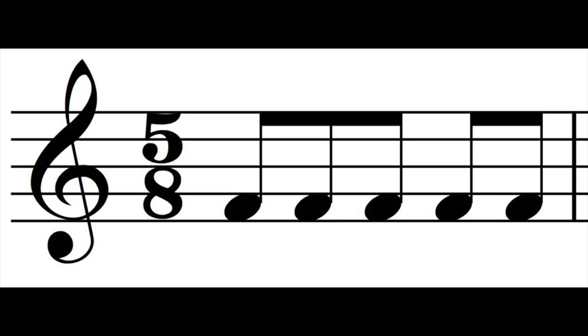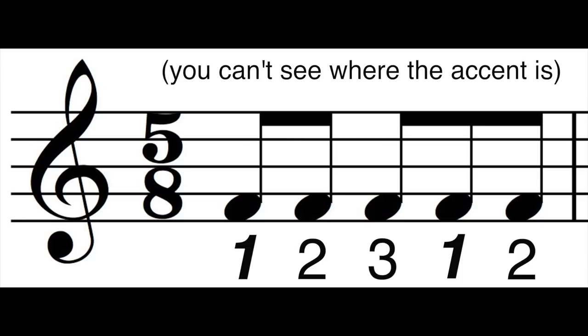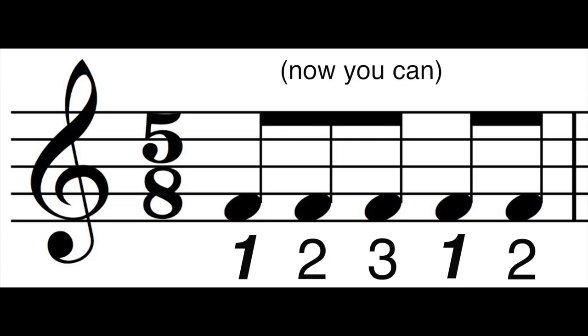To answer your odd time signature question: make sure that whatever the subdivision the music is supposed to be felt in is reflected in the parts. If the music has a particular grouping feel, don't notate it contrary to how it's actually supposed to be felt. Make sure you can always visualize the subdivision, because in any sort of meter you're supposed to subdivide — that's how people actually feel the music. I'd really strongly encourage you to read more music if you want to write sheet music for other people to read.